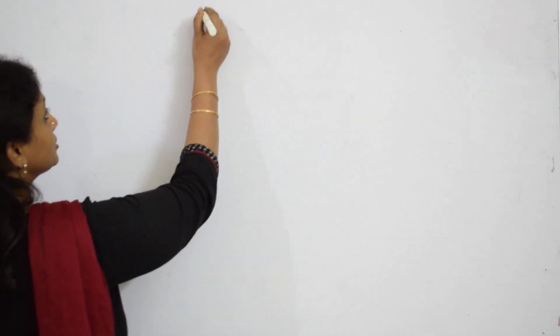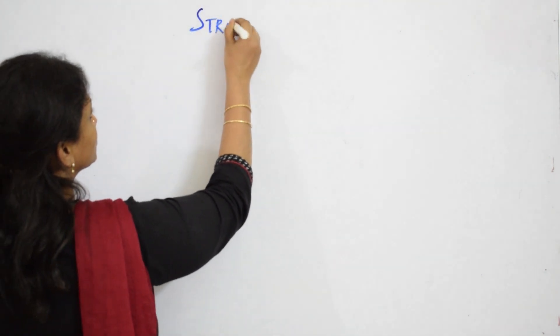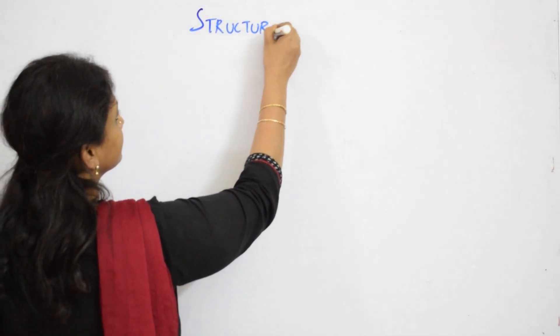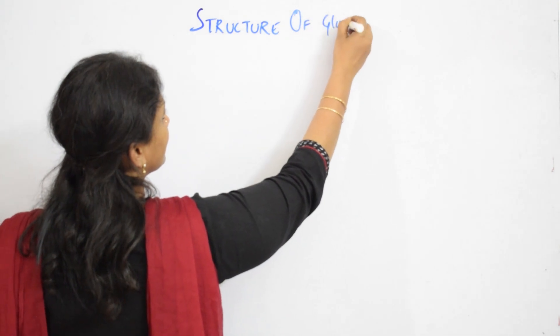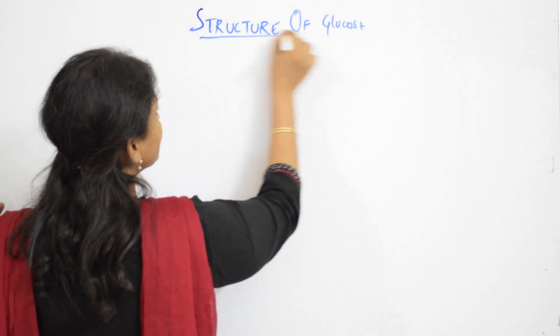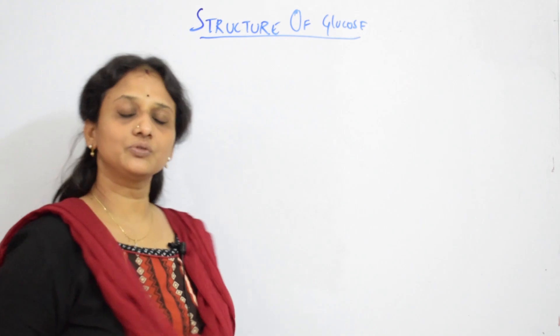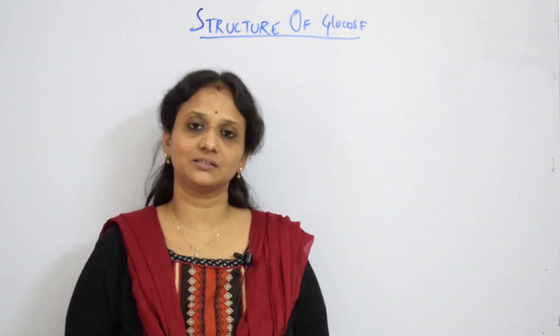Now let us start with the first topic, that is monosaccharides. I already gave you examples of glucose, fructose, ribose, and deoxyribose. Now let us start with the actual structure prescribed for your Grade 12 syllabus, that is glucose. So let us write the structure of glucose.